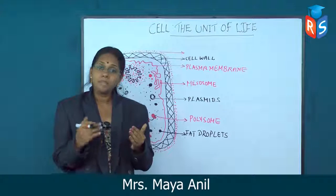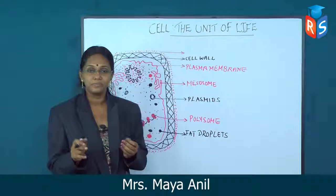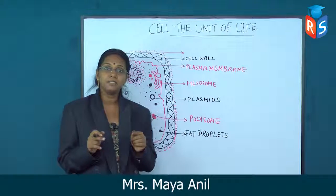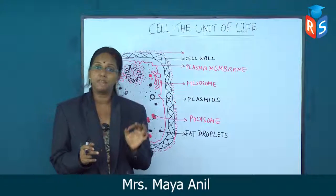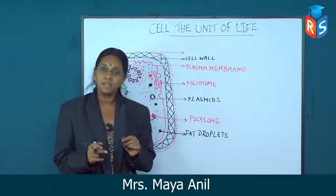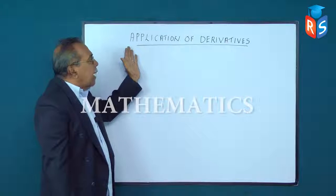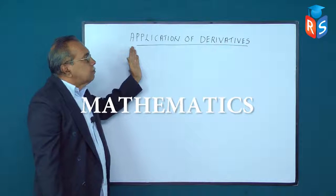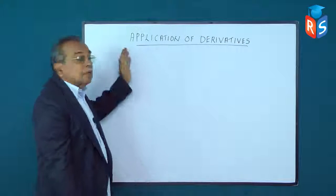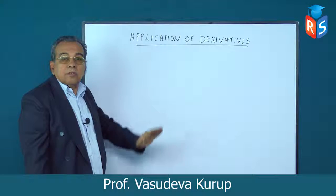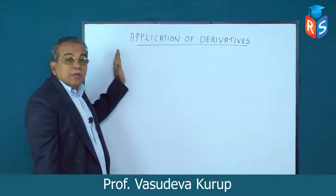Cells differ not only in size and shape but also in basic structure. Most cells have a well-defined nucleus surrounded by a membrane called the nuclear membrane.